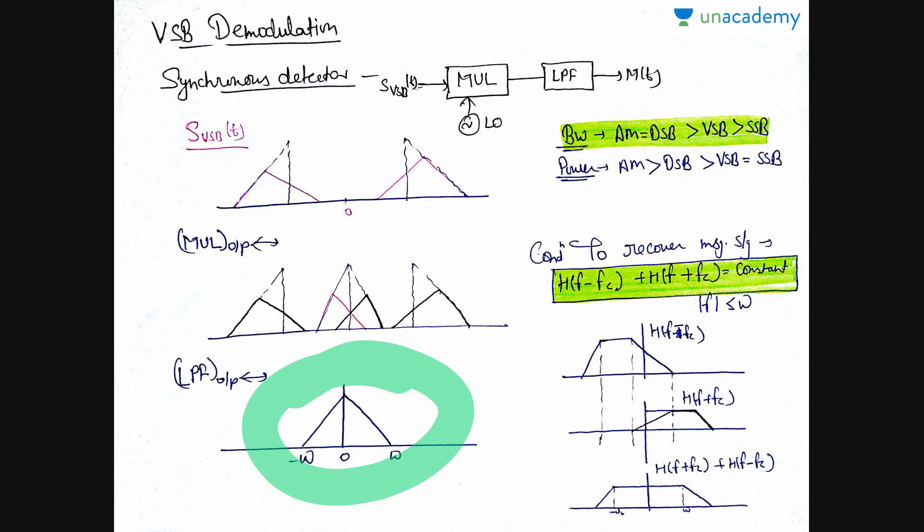Now, let us compare our modulation techniques on the basis of the bandwidth and the power. For the bandwidth basis, AM and DSB have the same bandwidth, that is, the bandwidth twice of the bandwidth of the message signal. And this bandwidth is greater than that of the VSB. That is, VSB have a bandwidth requirement less than that of AM and DSB. But bandwidth requirement for VSB is still greater than that of the SSB. So, this is the order for the bandwidth. A question can be asked from this in the ES examination or it can be in any PSU exam.